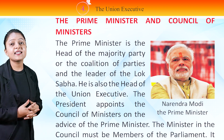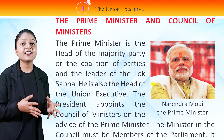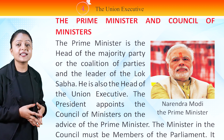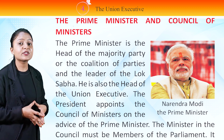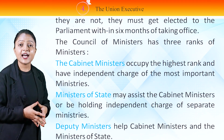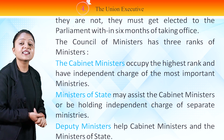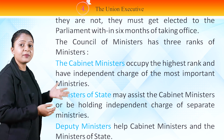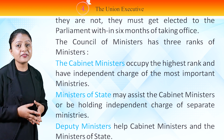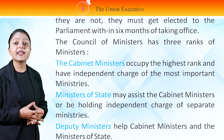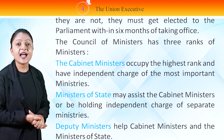The Prime Minister and the Council of Ministers: The Prime Minister is the head of the majority party or the coalition of parties and the leader of the Lok Sabha. He is also the head of the union executive. The President appoints the Council of Ministers on the advice of the Prime Minister. The ministers in the Council must be members of the Parliament. If they are not, they must get elected to the Parliament within 6 months of taking office. The Council of Ministers has 3 ranks of Ministers. The Cabinet Ministers occupy the highest rank and have independent charges of the most important ministries. Ministers of State may assist the Cabinet Ministers or hold independent charges of separate ministries. Deputy Ministers help Cabinet Ministers and the Ministers of State.